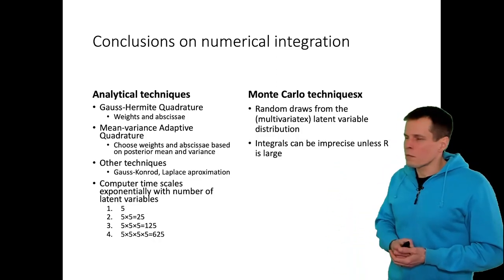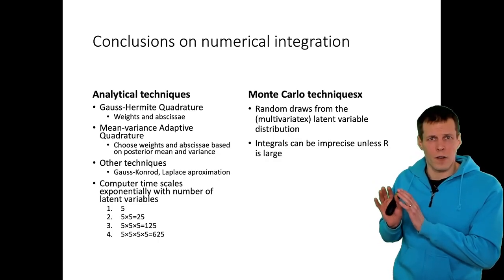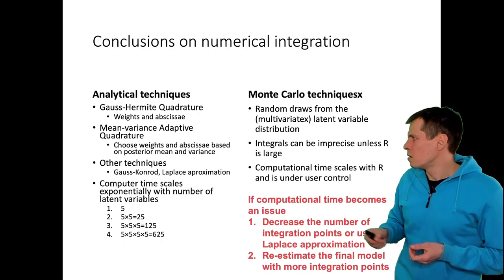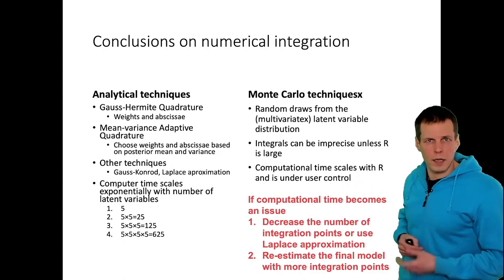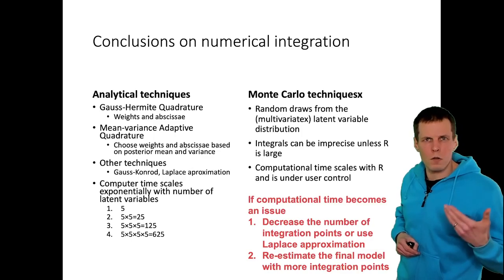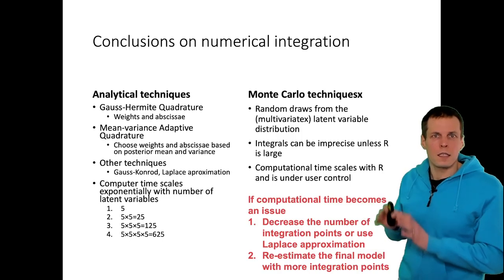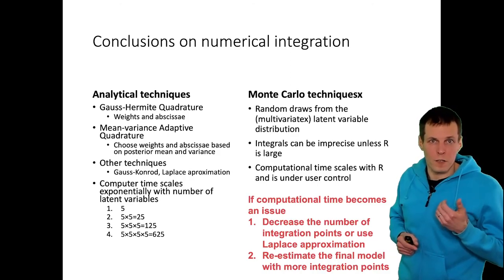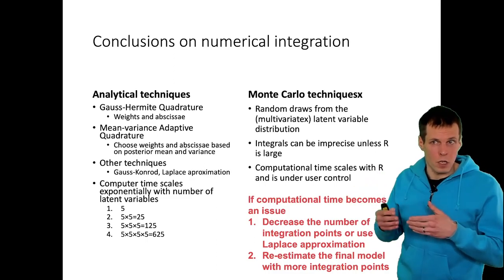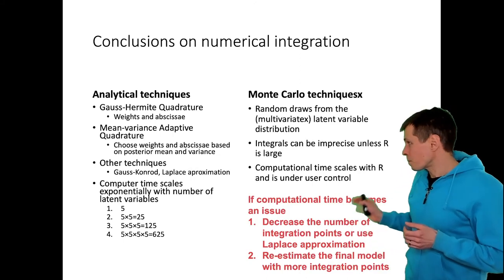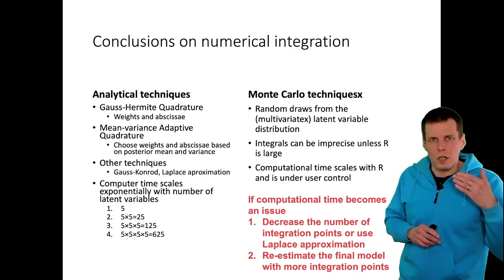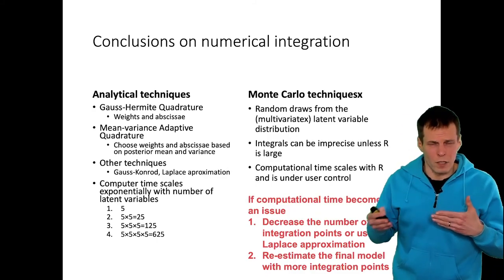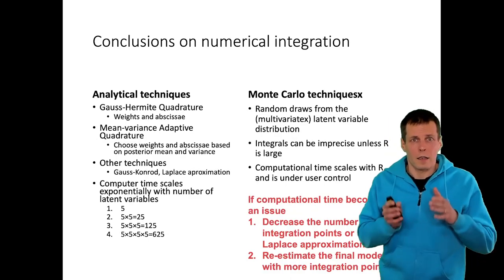An advantage of Monte Carlo integration is that while it can be imprecise if the number of replications is small, the user has more direct control over computation time. If you decide to draw 1,000 replications, you draw 1,000 values regardless of model complexity, because instead of nested integration you draw samples from a multivariate normal distribution — getting all latent variable values in one draw. If computation time is an issue, you can either decrease the number of integration points or apply Laplace approximation, which scales a lot better for complex problems.